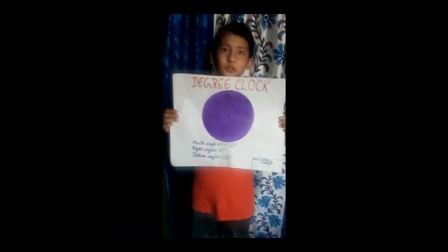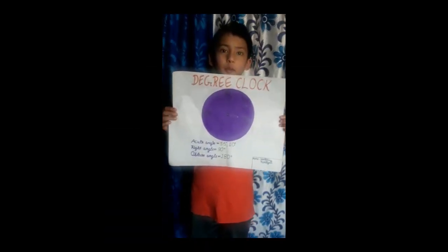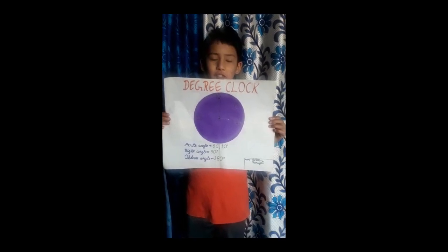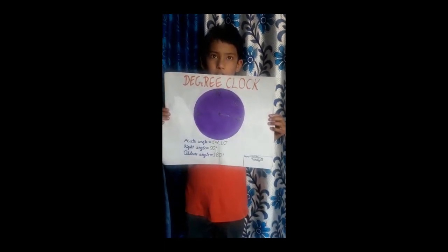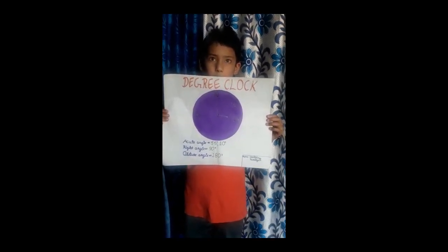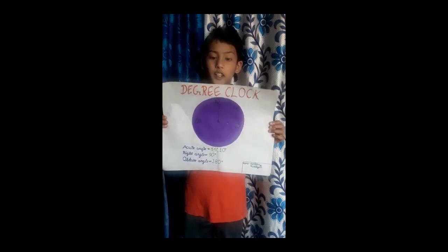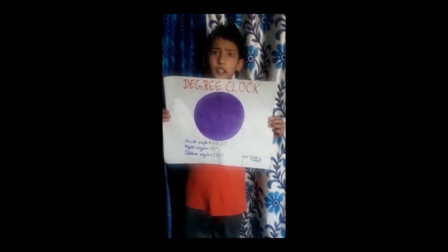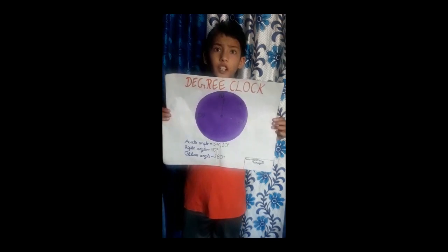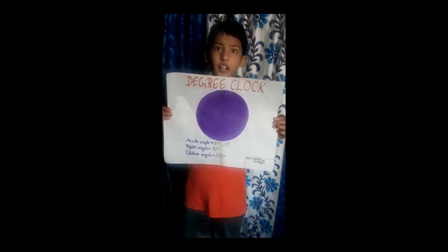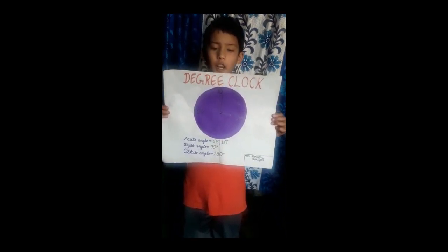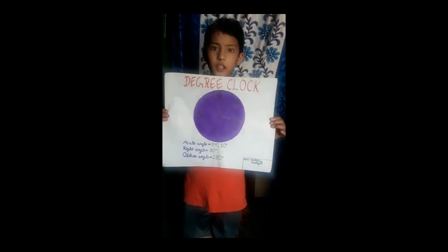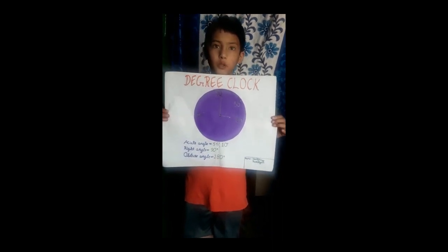Thank you. My name is Karthike Parthial. I study in class 5. Today I made a degree clock. I measured angles on it, like 90 degrees, 55 degrees, 10 degrees, and 180 degrees. I also wrote the names of the angles: acute angle, right angle, and obtuse angle.